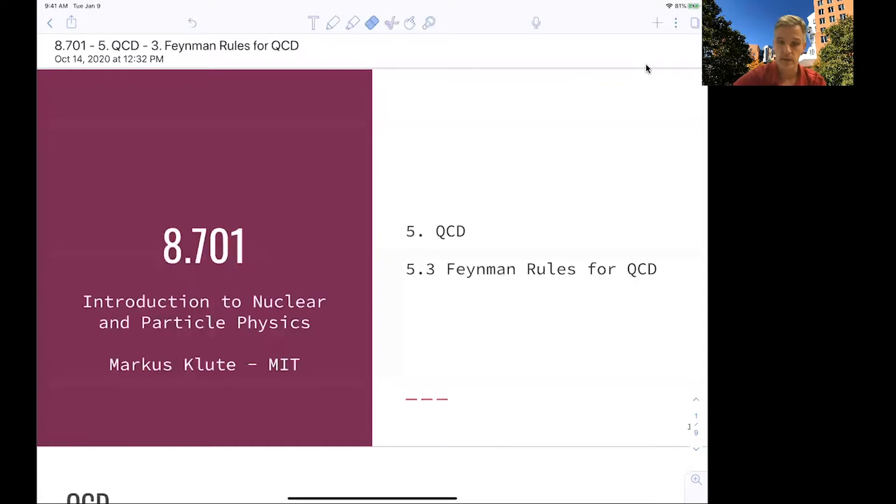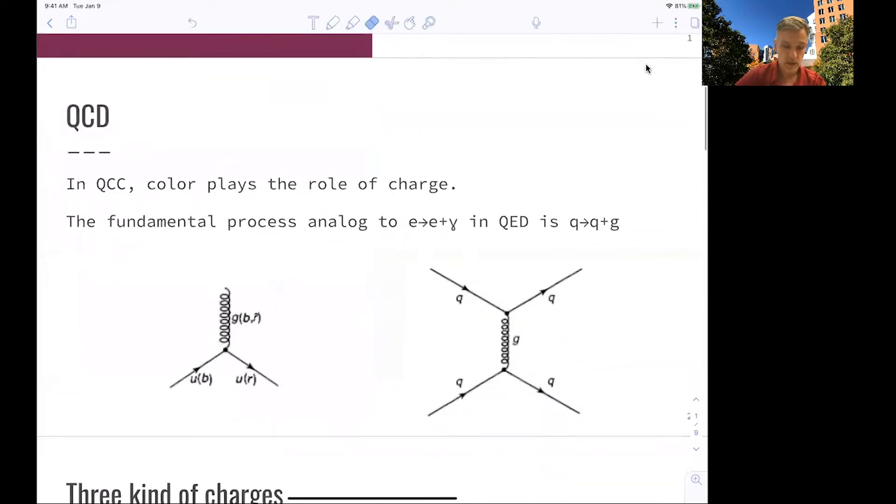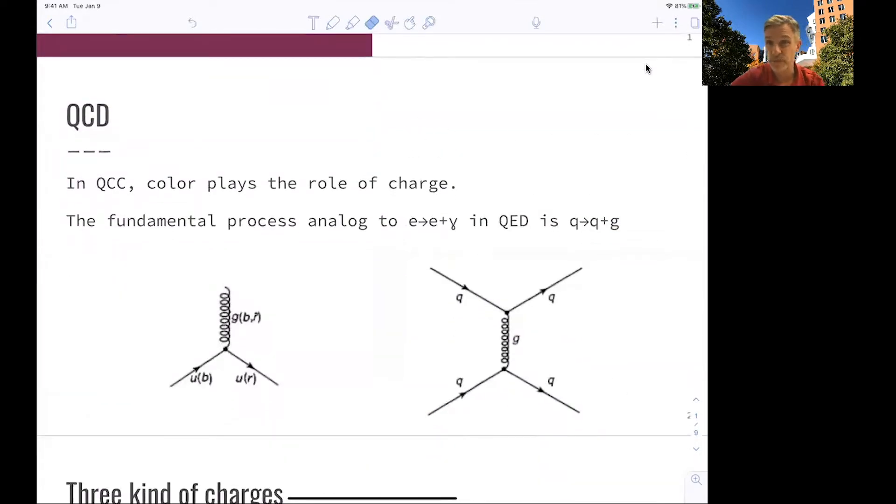We have to keep track of the color of particles. So color, the charge of QCD, plays a very important role here. If we just investigate this fundamental process here, this fundamental vertex,